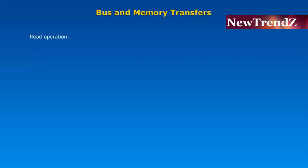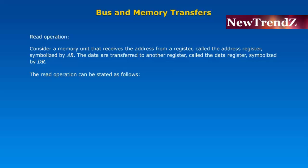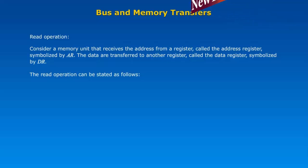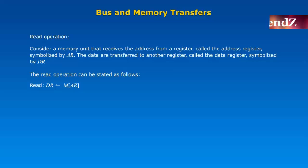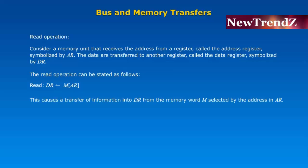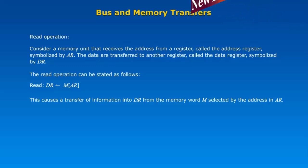Read operation: Consider a memory unit that receives the address from a register called the address register, symbolized by AR. The data are transferred to another register called the data register, symbolized by DR. The read operation can be stated as shown here. This causes a transfer of information into DR from the memory word M, selected by the address in AR.